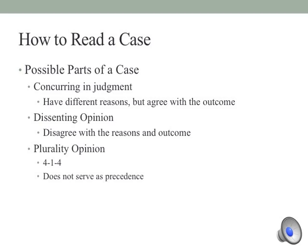With dissenting opinions, justices disagree often with the reasons and the outcome. There's also the plurality opinion, where you have four justices sign on to the majority, one concurring in judgment, and four dissenting opinions — and opinions like this do not serve as precedents. When reading a case, go to the majority opinion. You'll see sometimes the justices reference a lot of court cases as precedents — completely ignore those for right now. Just look at the text; anything confusing, ignore it and get to the text. If you do that, you'll see how clear these judges can be.